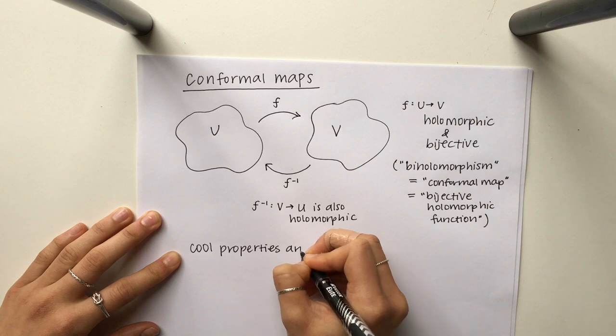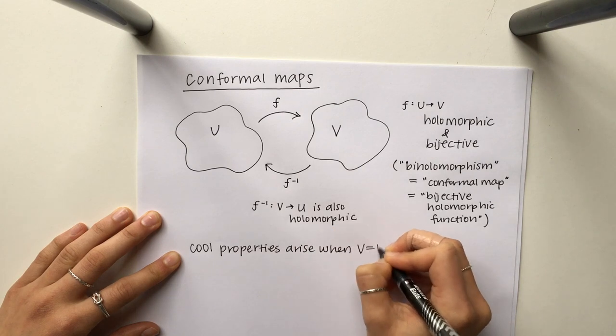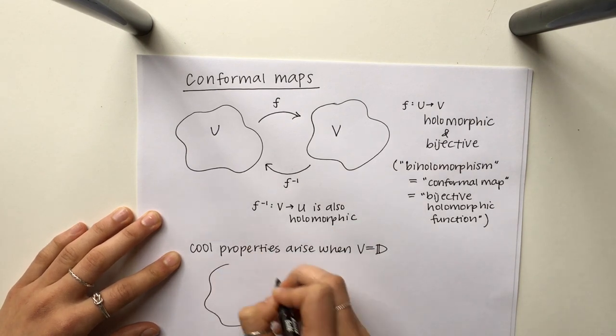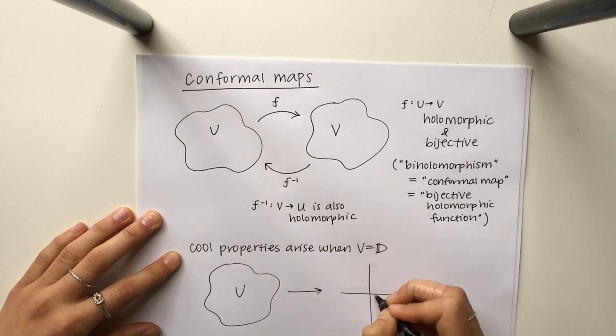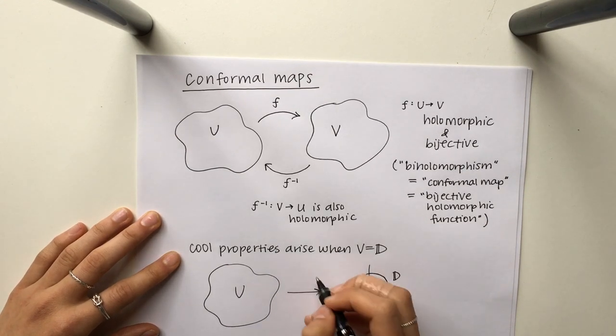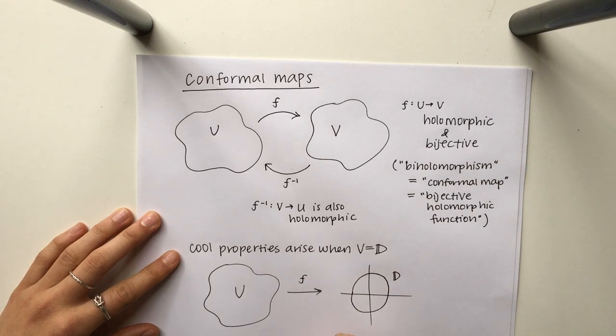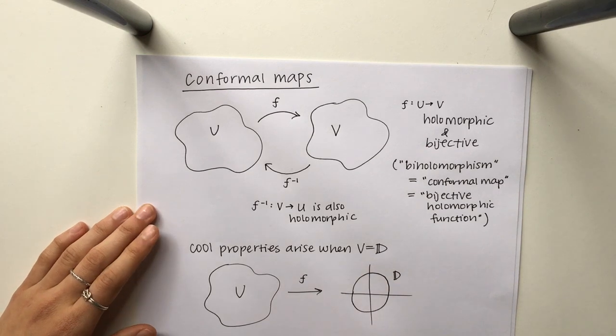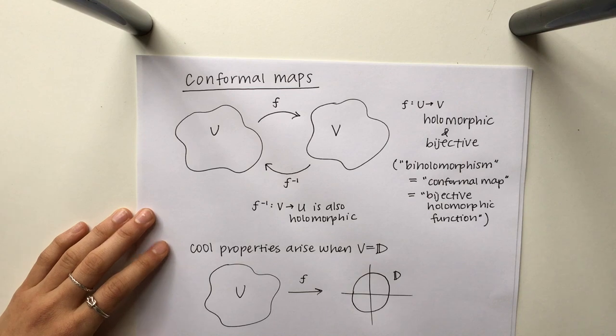There are some cool properties which arise when V specifically is the unit disk. And so really what our question comes down to is what properties of U need to be in place for you to have a conformal map to D. And it turns out all that needs to happen is U needs to be simply connected.